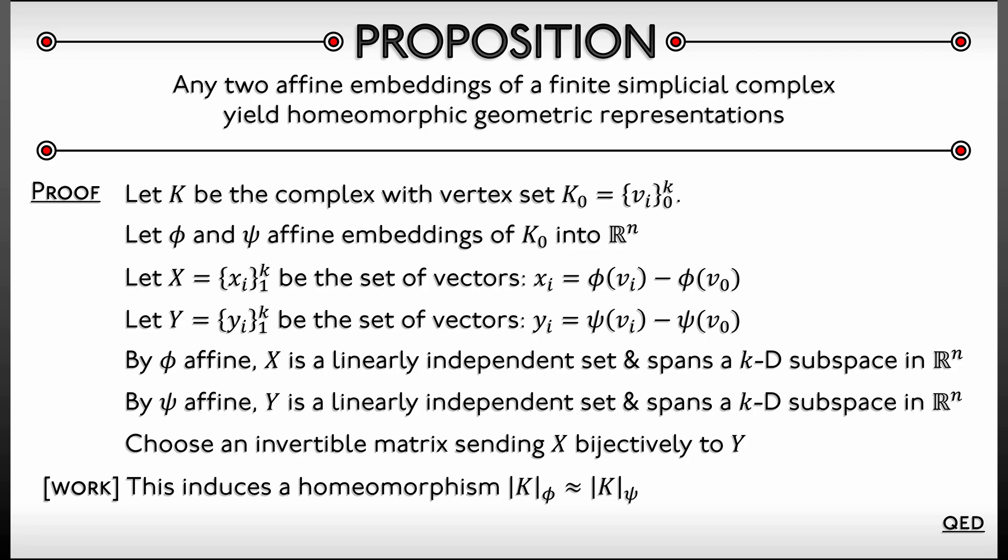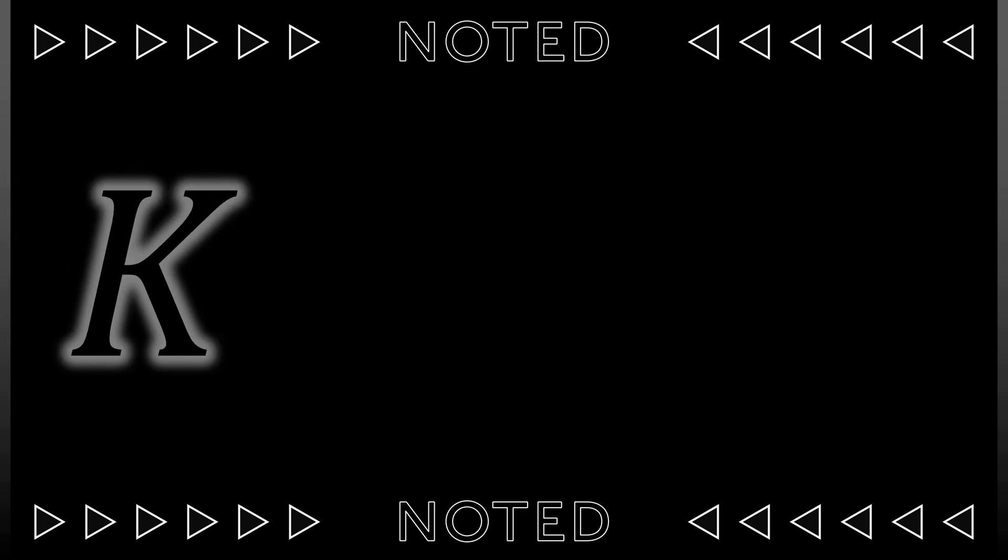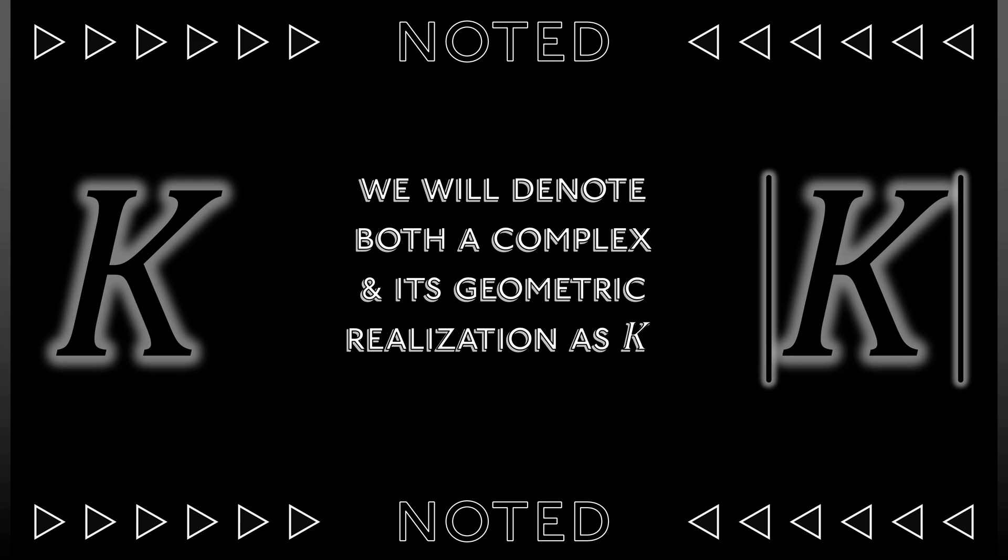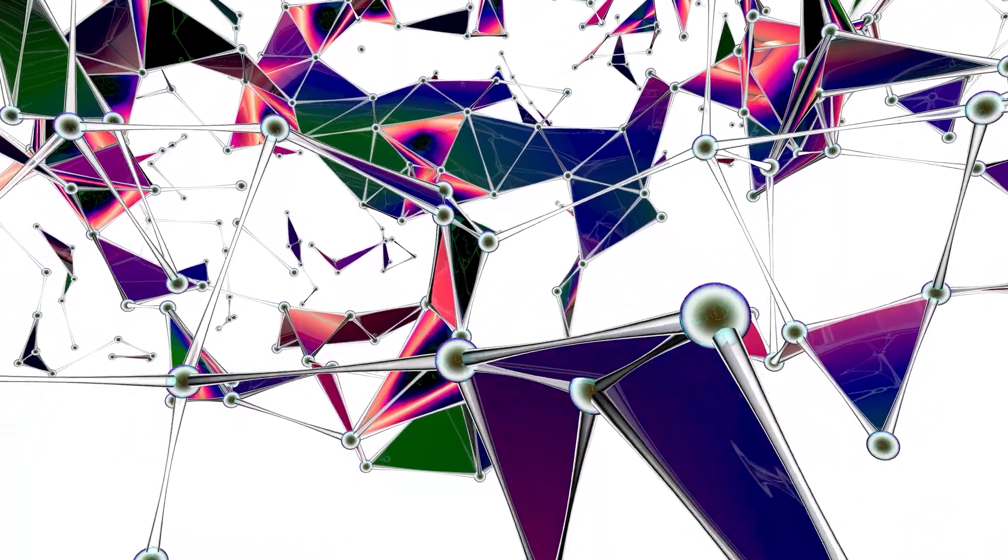Because of that, we're just not going to get all that worked up about the notation. We're going to denote both a complex and its geometric representation as K. We're going to ignore the little geometric representation absolute value signs. We're going to ignore the φs since it doesn't really matter. We're just going to be sloppy as to whether we're talking about a simplicial complex or a geometric representation of the simplicial complex. There's only going to be a few times where we really use this notation and care about it. Most of the time, we're just going to go back and forth. And in particular, we can draw some nice pictures.